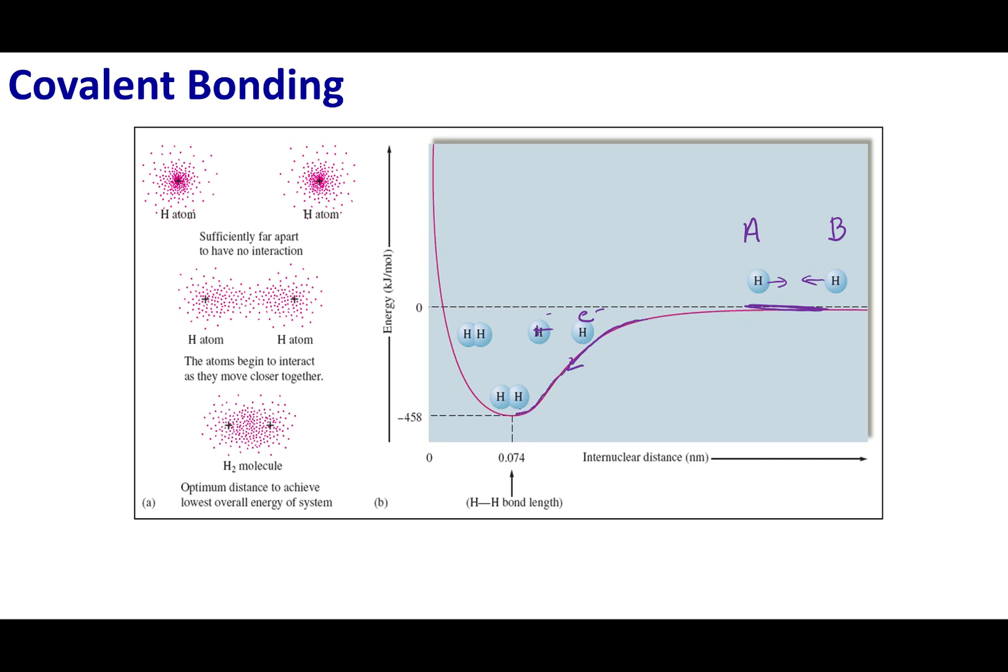As I bring them closer and closer together, these new interactions become stronger and stronger, and I lower the energy of my system. Remember, nature always wants to lower the energy of the system. So this interaction is a favorable interaction, and it's better for these two atoms to be together than they are apart. However, there's a limit to how close I can bring these two things together. As I bring them closer and closer together, you can start to see that I start to raise the energy of our system.